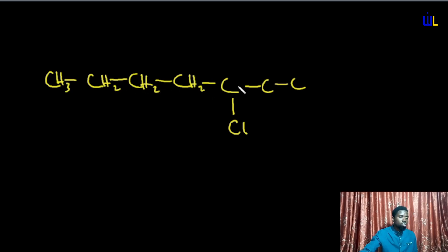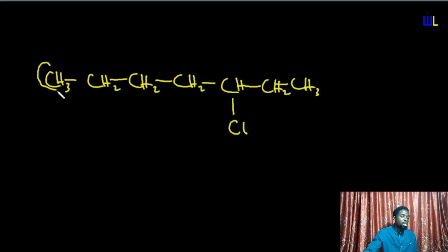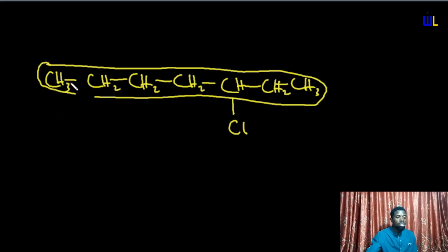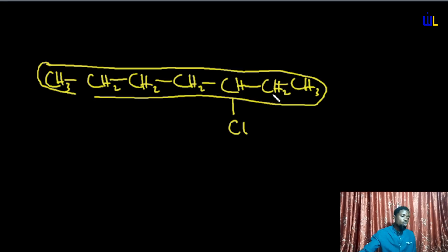Let's try another example with a chloro substituent. Our parent chain is a straight chain — let's fill in the hydrogens: H₂ groups along the chain and H₃ at the ends. We identify the substituent as a chloro group. To allocate locants we do not start from the far end; we start from the end closest to the substituent. Counting from the near end: one, two, three — and we've reached the substituent.